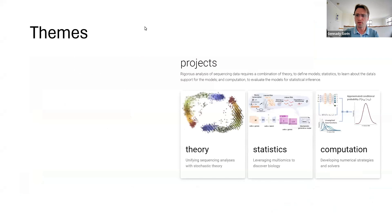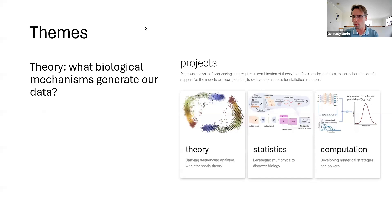At the graduate level and in the context of sequencing, chemical engineering really involves the unification of these basic themes. Theory: what kind of biological mechanisms actually contrive to generate our data? How should we model them? Computation: how can we solve these models? How can we put them into a computer and get a number out? And statistics: what can we hope to infer from models and data? These are the three basic themes I'm going to be coming back to throughout this talk.